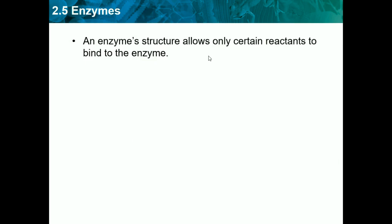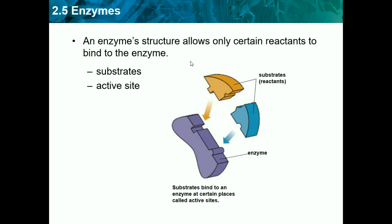In enzymes, structure allows only certain reactants to bind to the enzyme, so one enzyme binds certain things. Substrates and active sites are parts of this equation of an enzyme. The purple piece is the enzyme and the little notches in it are the active sites. The two other reactants are called substrates. They come together into the enzyme's active sites and bind together.